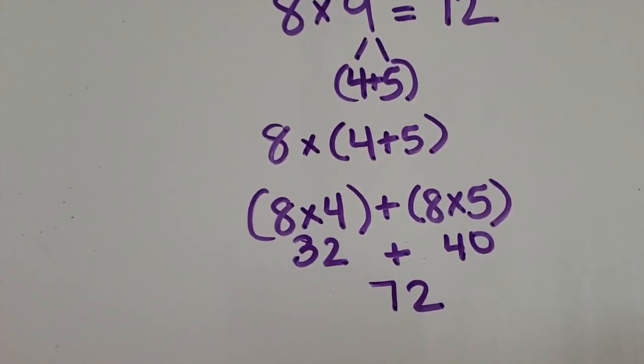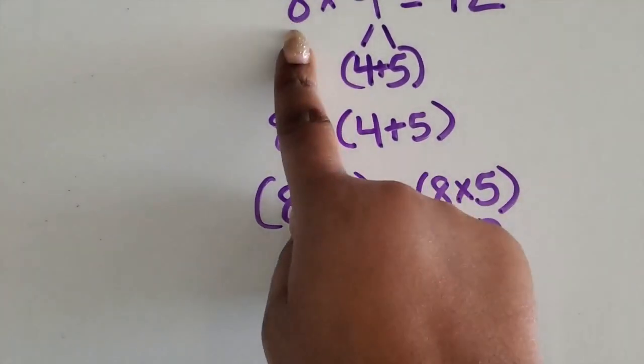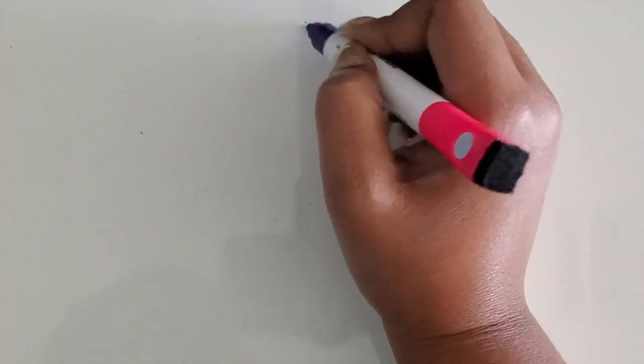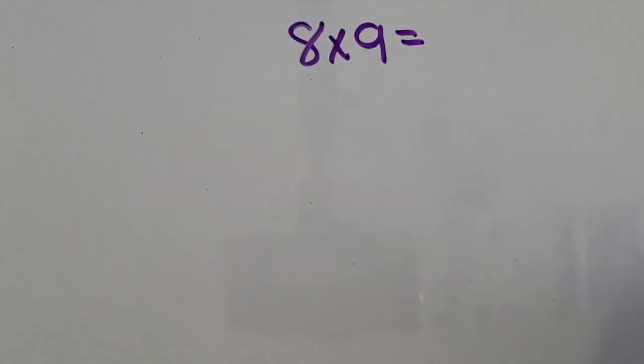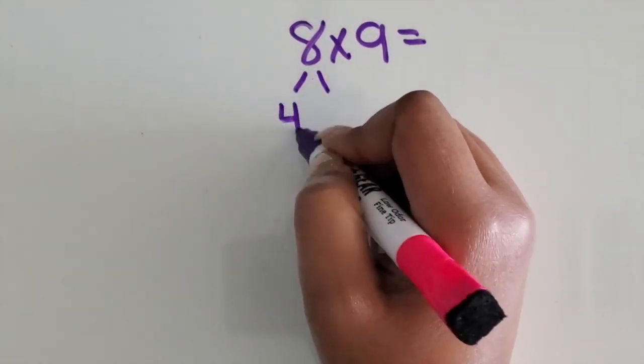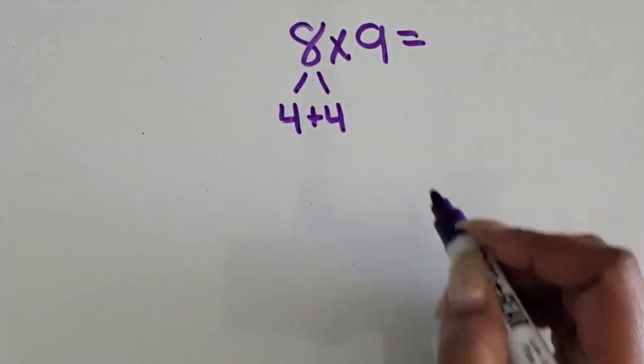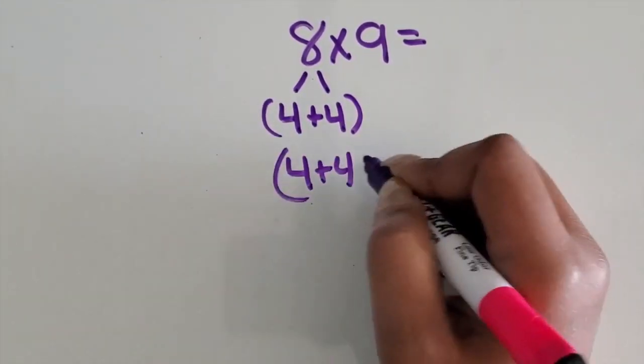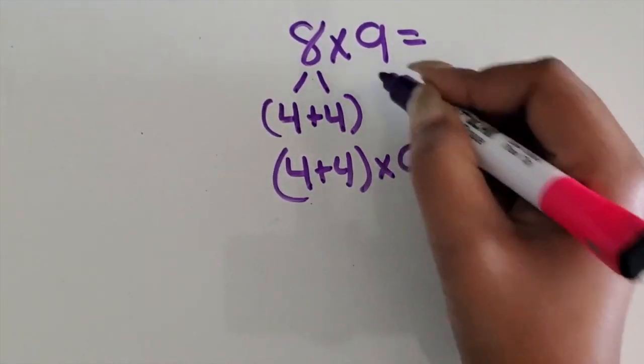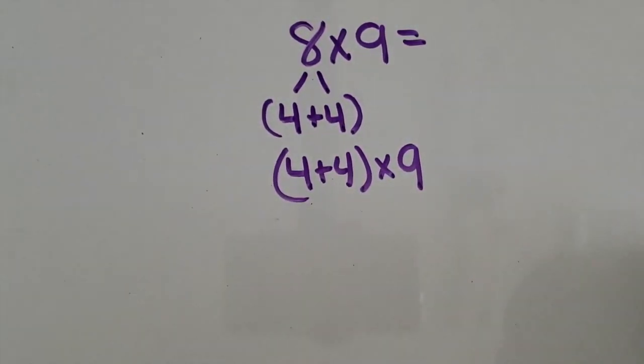We can also break apart or decompose that first factor. So let's look at if we decompose the 8 instead of the 9. So our equation was 8 times 9. So this time we're going to decompose the 8 into 4 and 4 and keep the 9. So I know 4 plus 4 times 9 is going to give me the same product as 8 times 9.